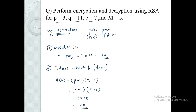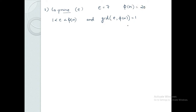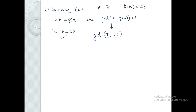E value is 7 and phi of N is 20. We check the conditions: first, E equals 7 is less than phi of N equals 20 — condition satisfied. Second, GCD of 7 and 20 equals 1 — condition satisfied. So the value of E is 7, as directly given in the question.